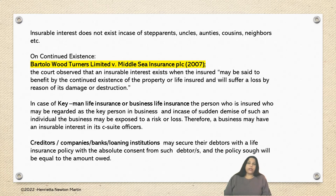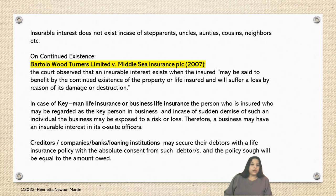Moving on to creditors — creditor companies or banks and loaning institutions may secure debtors with a life insurance policy, with absolute consent from the debtors, and the policy sought will be equal to the amount owed.